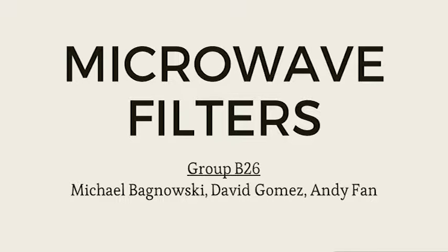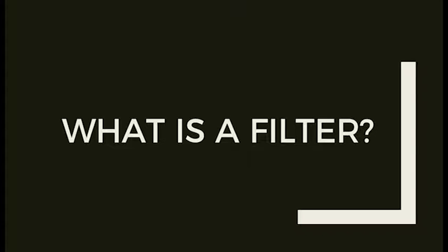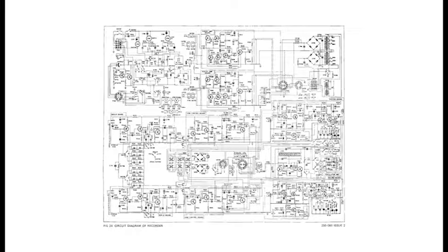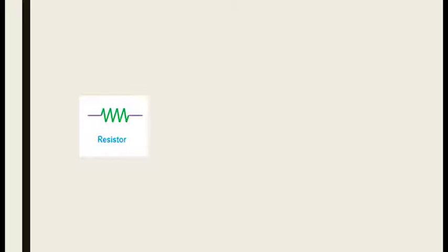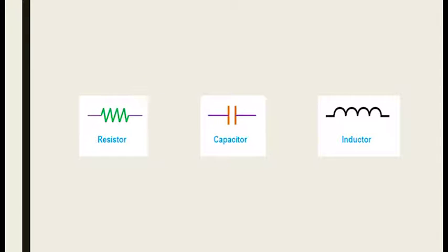Welcome to Group B26's presentation on microwave filters. A filter is an electronic circuit comprised of resistors, capacitors, and inductors that are designed to select or remove unwanted frequency components of a signal or sound wave.